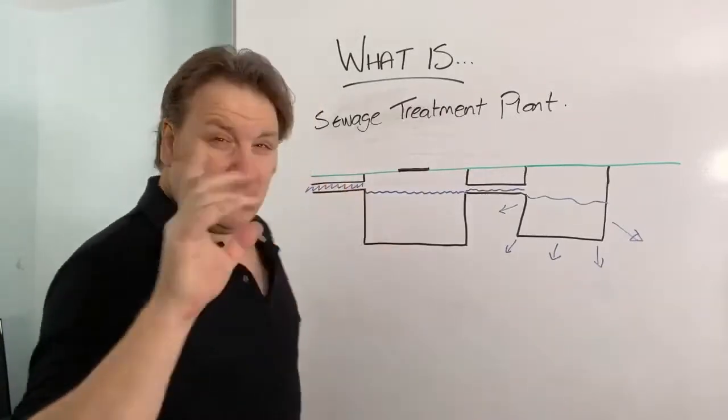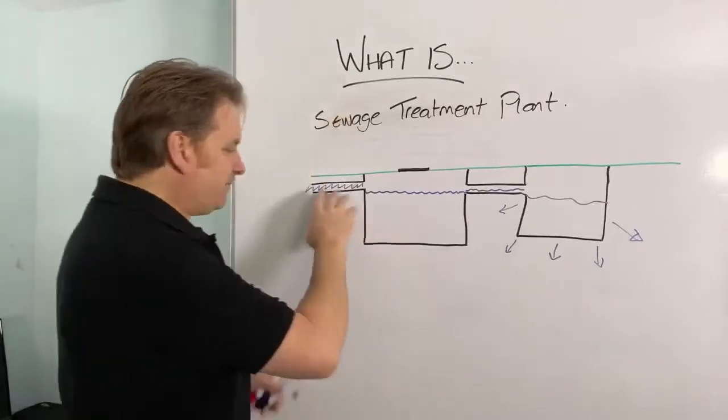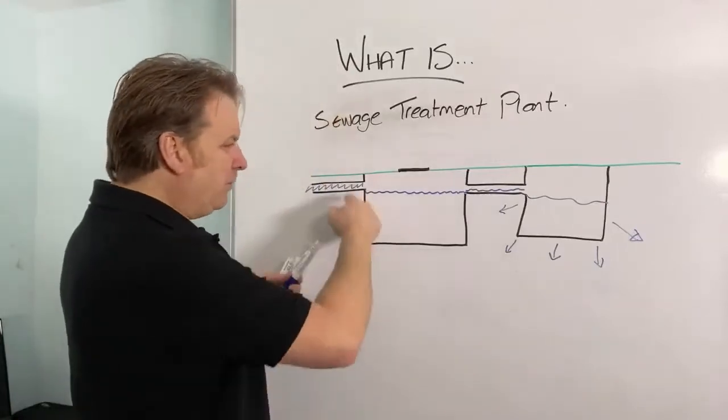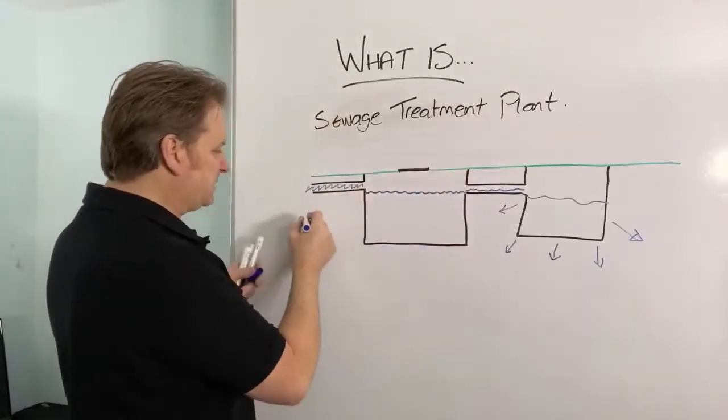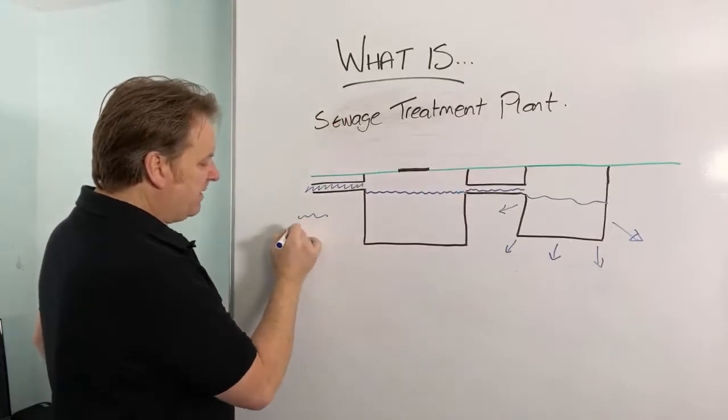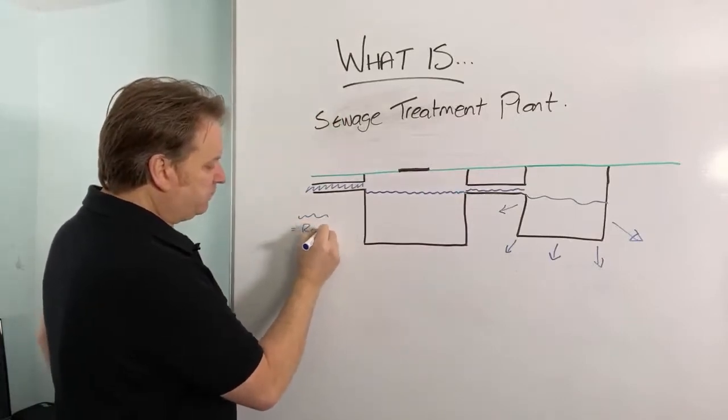Now, a sewage treatment plant, if you go to the edge of a city or a town or whatever, you'll see these massive circular concrete rings with like rods on that go around and it stinks when you go past. That's a massive sewage treatment plant. But a domestic one for me and for you living at home, this is what I'm talking about here. So what is a domestic treatment plant?